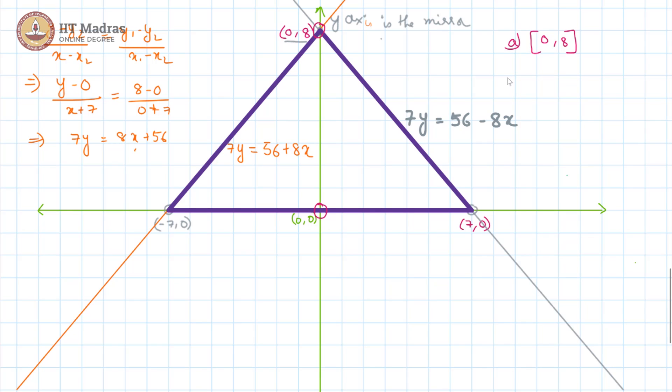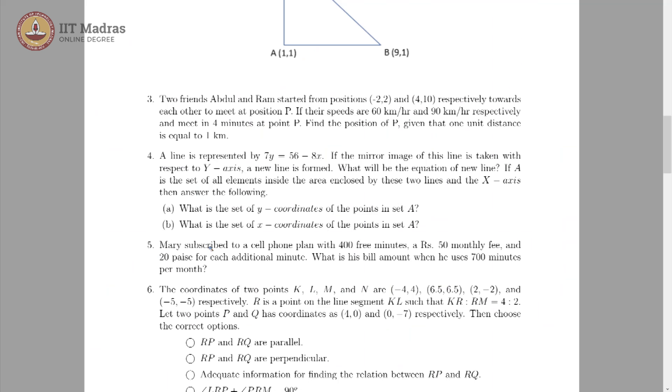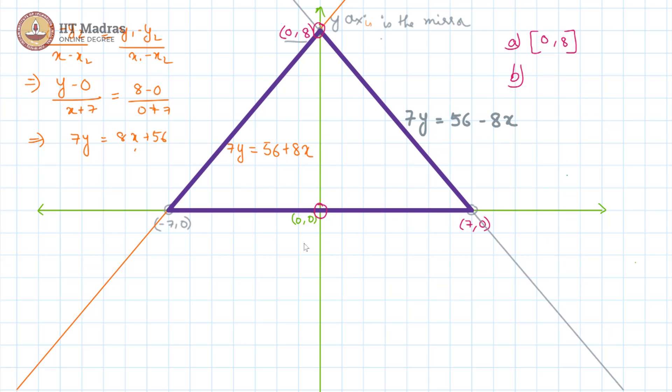So, this is the answer for part A and for part B, we have what is the set of x coordinates of the points in set A. And again, we look for the least and the maximum here. The least is minus 7 and the maximum is plus 7 and every value in between is there. So, this would be again the closed interval minus 7 comma 7.